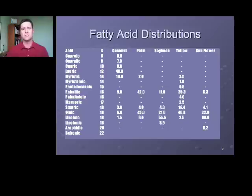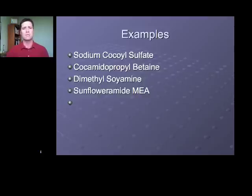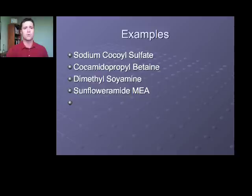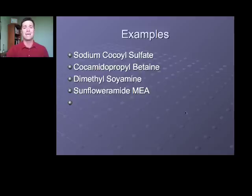Some examples of source-derived ingredient names include sodium coquyl sulfate and cocomidopropyl betaine — the 'coco' part refers to coconut oil. Dimethylsoyamine is derived from soybean oil, hence 'soy.' And something derived from sunflower oil would be sunflower amide MEA. You can see the name of the source is right in the ingredient name, which gives you a good sense of the fatty acid distribution being used.